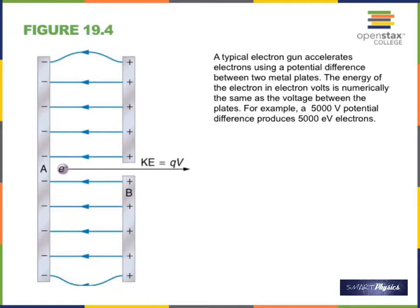Electron volt is a new unit of energy. One electron volt is the kinetic energy of an electron accelerated through a potential difference of one volt. If accelerated through two volts, its kinetic energy is two electron volts; through 100 volts, it's 100 electron volts. One electron volt equals 1.6 × 10⁻¹⁹ joules.